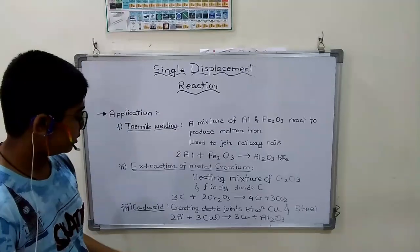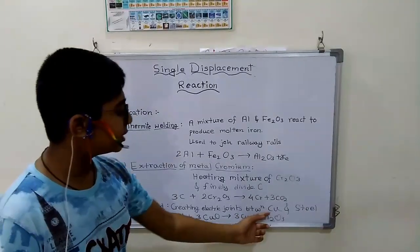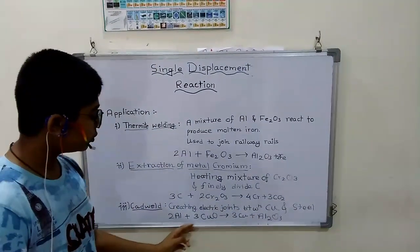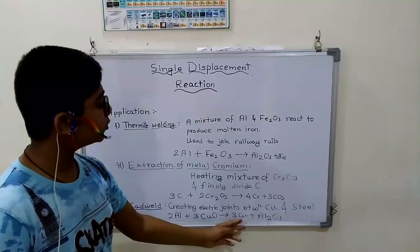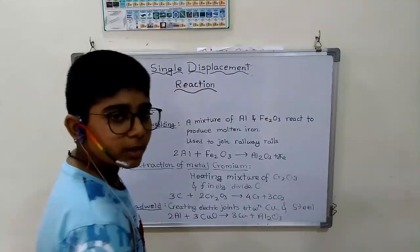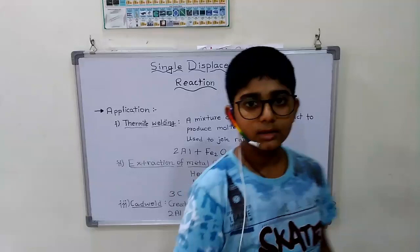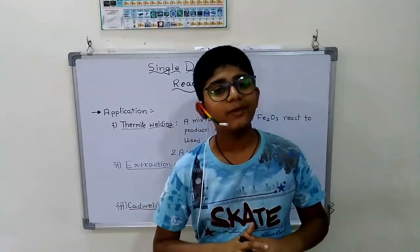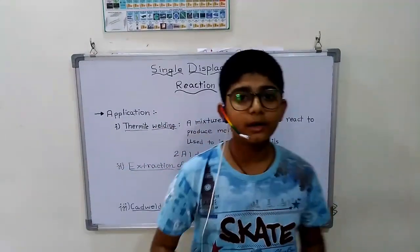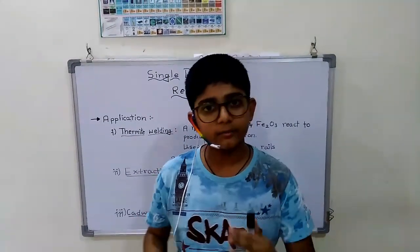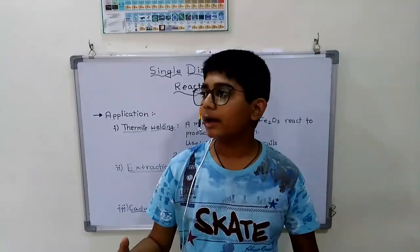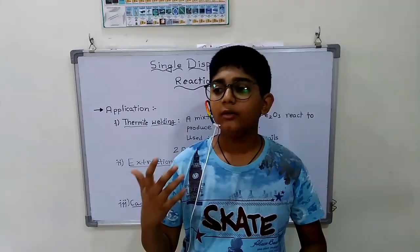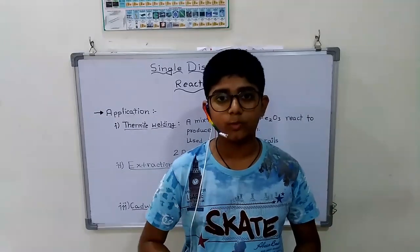Next, we have Cadweld — creating electric joints between copper and steel. The reaction is: 2Al plus 3CuO gives 3Cu plus Al2O3. There are many more applications of single displacement reaction, including acid injection, steel making, extraction of metals, and more.